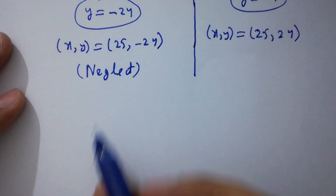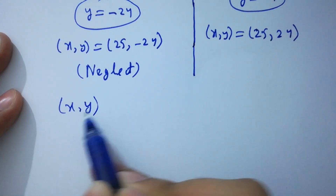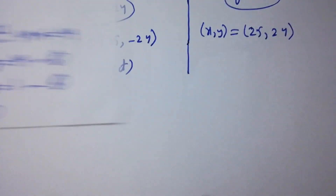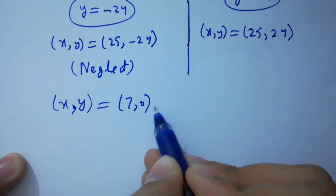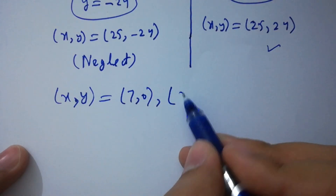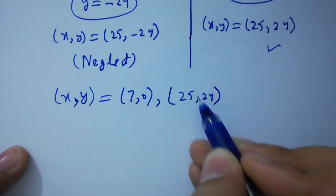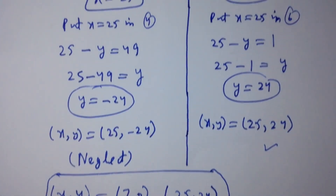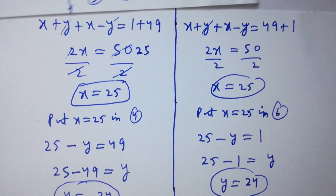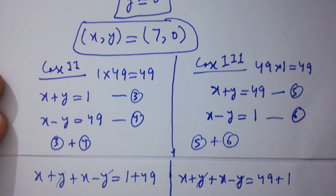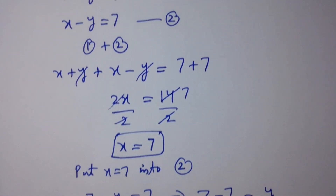So we have two solutions for x and y: the first solution is x equal to 7, y equal to 0, and the second solution is x equal to 25, y equal to 24. Thank you for watching this video. Please subscribe to the channel for notifications of new videos, and share with your classmates and friends so they can benefit too. Bye.